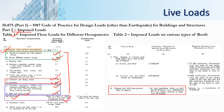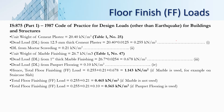For roof live load: if access is not provided to the roof, use 1.5 kN/m²; if access is only for maintenance, use 0.75 kN/m². These values apply for roof slopes up to 10 degrees. If the slope exceeds 10 degrees, decrease the imposed load by 0.02 kN/m² for every additional degree of slope. So as the roof slope increases beyond 10 degrees, the roof live load magnitude decreases accordingly.